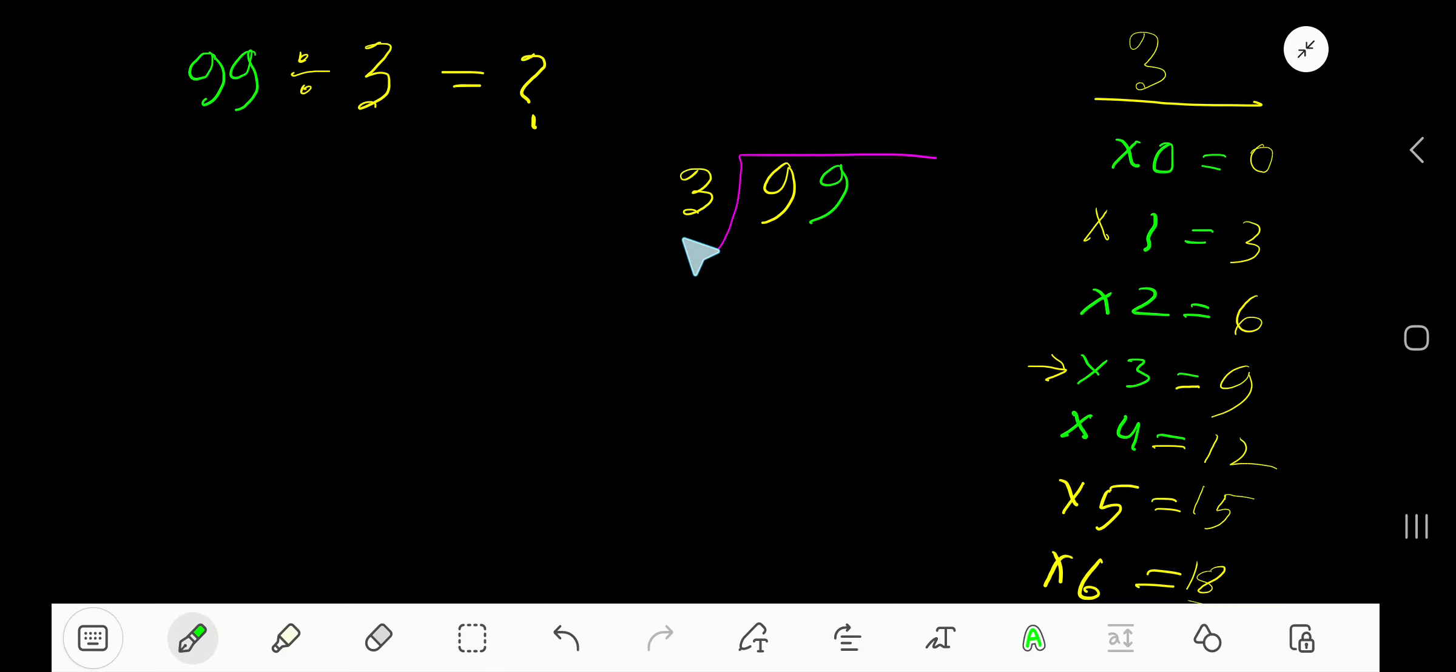99 divided by 3. Here 3 is a divisor, so we need the multiplication table of 3. 3 times 0 is 0. 3 times 1 is 3. 3 times 2 is 6. 3 times 3 is 9.